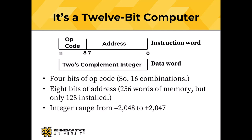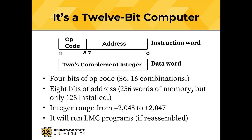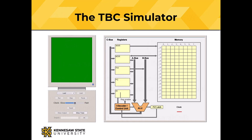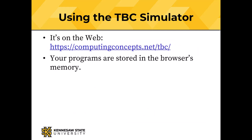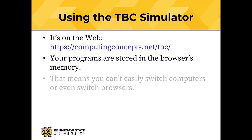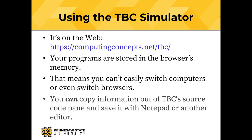When we look at a word as data rather than an instruction, it's a two's complement integer 12 bits long, with an integer range from minus 2048 to plus 2047. This program will run little Martian programs if they're reassembled. There's a simulator for it — a control panel and screen on the left, and the data path and memory of the computer on the right. The simulator is on the web at computingconcepts.net/TBC. Programs are stored in the browser's memory, so you can't easily switch computers or browsers, since Chrome and Firefox use different memory. You can copy information out of TBC's source code pane and save it with Notepad or another editor.